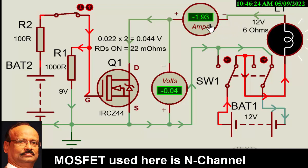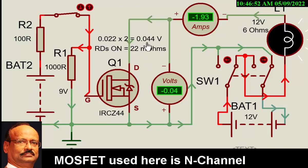This is the current flow in the traditional concept. Most importantly, the voltage drop across the switch — looking at the RDS, that is the resistance between drain and source — is 22 milliohms for this particular Z44 MOSFET. Multiplying 0.022 by 2 amperes gives 0.044 volts, which is exactly what is being shown here. We get a 0.04 volt drop across this switch.